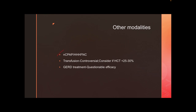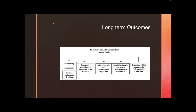Other modalities to prevent apnea include nasal CPAP and high-flow nasal cannula. Transfusion has a controversial role — consider it especially if hematocrit is less than 25 to 30 percent. GERD treatment has questionable efficacy. For long-term outcomes, intermittent hypoxia episodes are associated with retinopathy of prematurity, sleep-disordered breathing, bronchopulmonary dysplasia, altered cardiovascular regulation, long-term hypertension, neurodevelopmental disabilities, cerebellar injury, and affected insulin production.